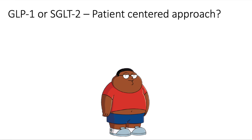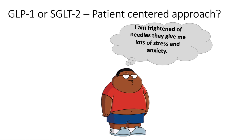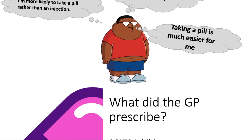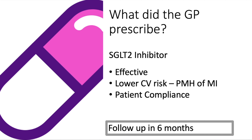The GP wanted to understand what Ashish's thoughts were. Ashish said he's extremely scared of needles and that they give him a lot of stress and anxiety. He also said he finds pills a lot easier to take and is more likely to take a pill than an injection. The GP therefore decided to prescribe Ashish an SGLT-2 inhibitor. Not only does the evidence base show it's effective in reducing HbA1c, but these drugs also reduce cardiovascular risk, which is very important given his history of myocardial infarction. By finding that Ashish is not a fan of injections, there will be greater patient compliance with SGLT-2 inhibitors, which are a pill, rather than GLP-1 agonists, which have to be injected.